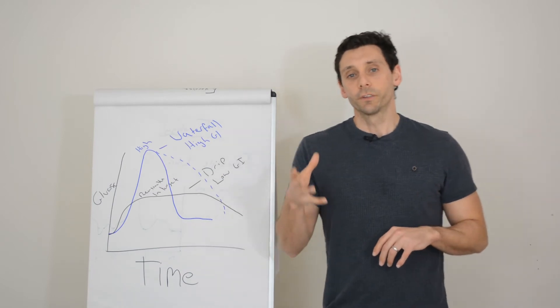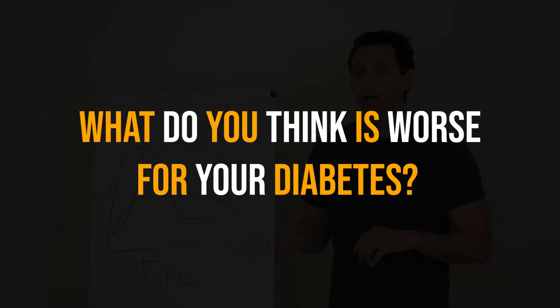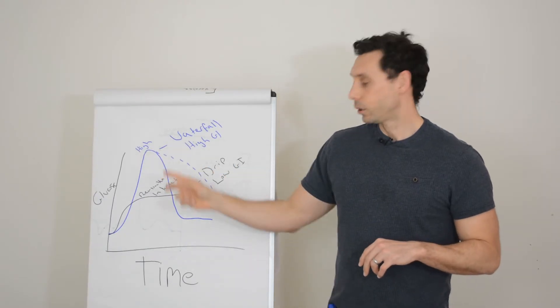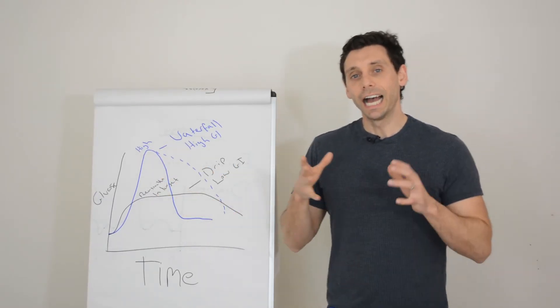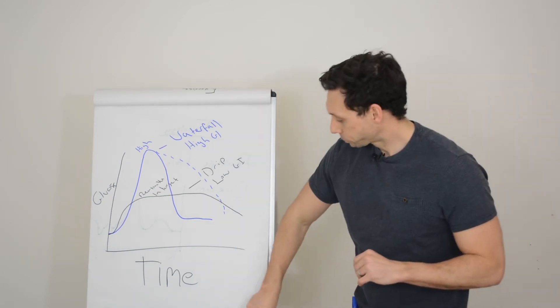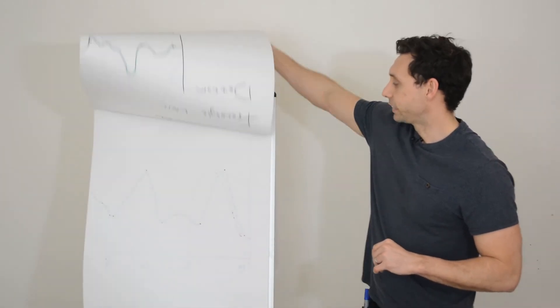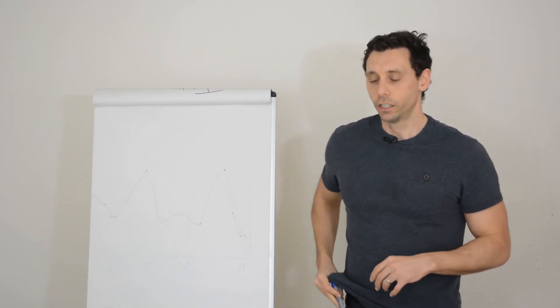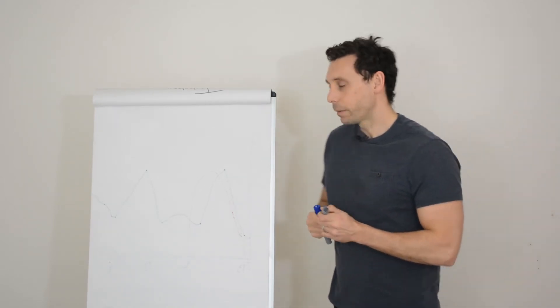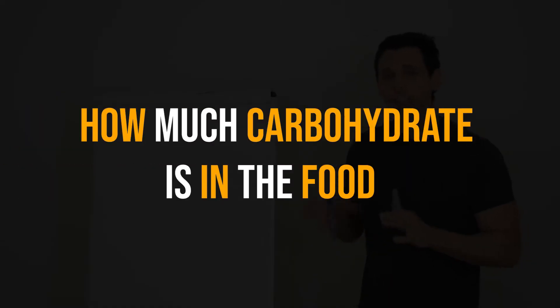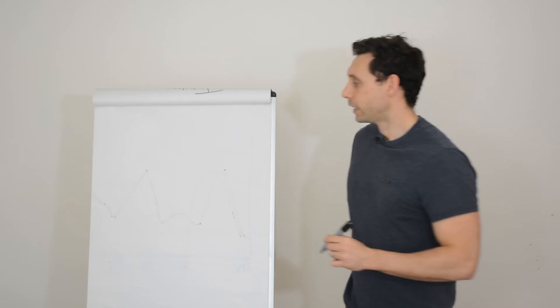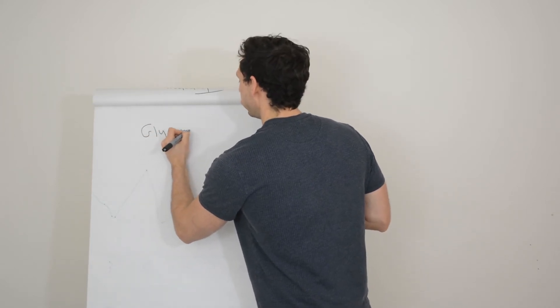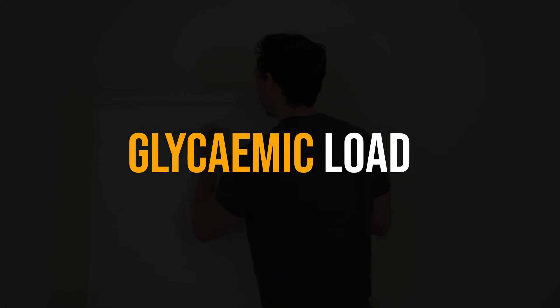But let me ask you a question on the basis of that. What do you think is worse for your diabetes? Watermelon or chocolate? And that gets to the crux of the point really. So what we really need to be doing is not just thinking about how quickly the food is absorbed with the glycemic index, but actually how much carbohydrate there is in the food as well.